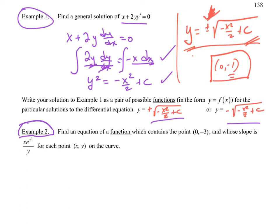Example number two. Find the equation of a function which contains this point. Uh oh, that looks like an initial condition. Whose slope is this for each point (x,y) on the curve? So they're already telling me that dy/dx is equal to xe^(x²)/y.